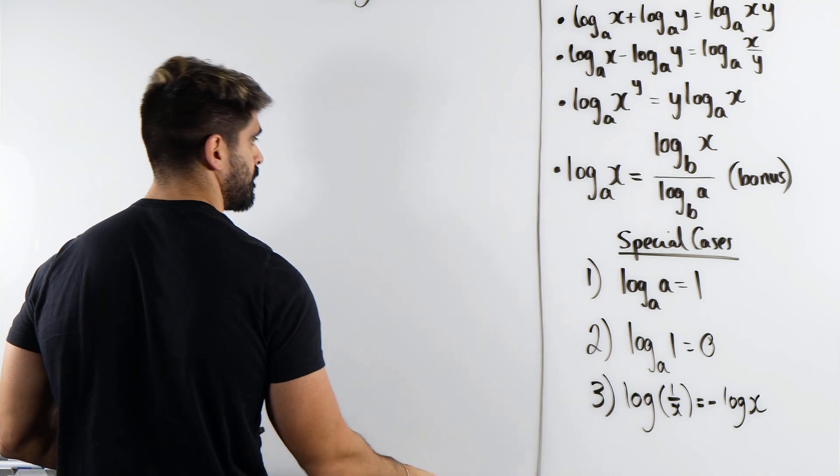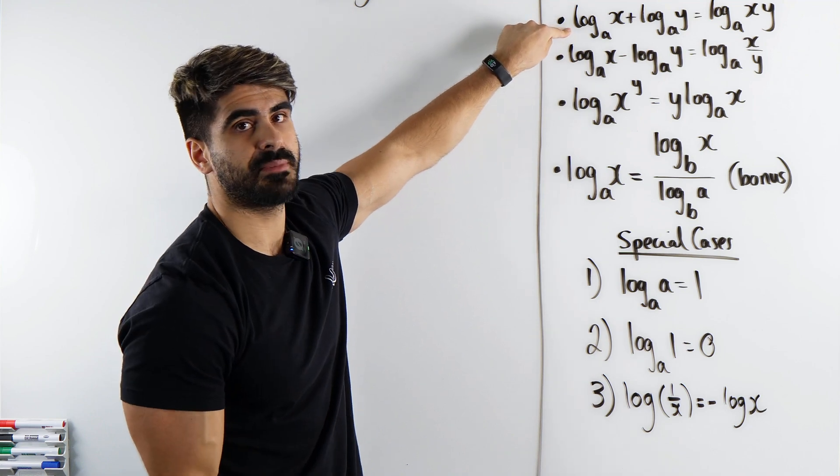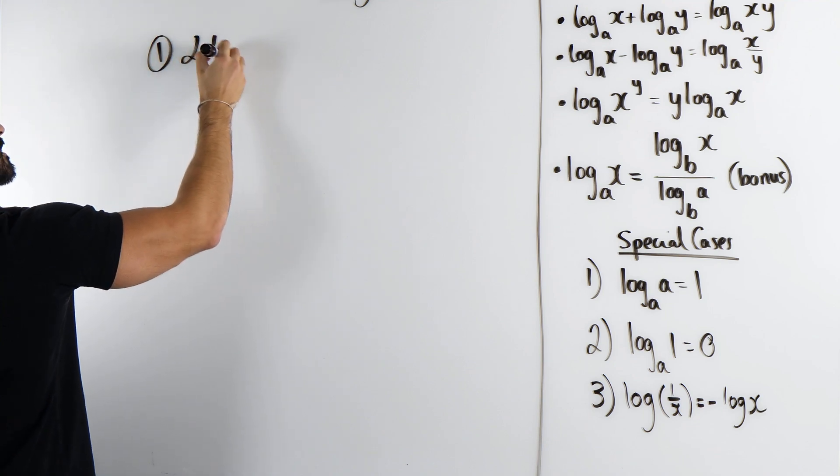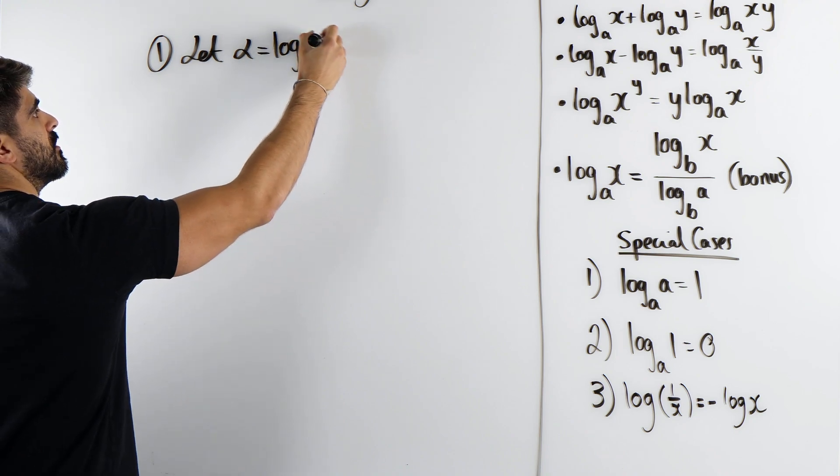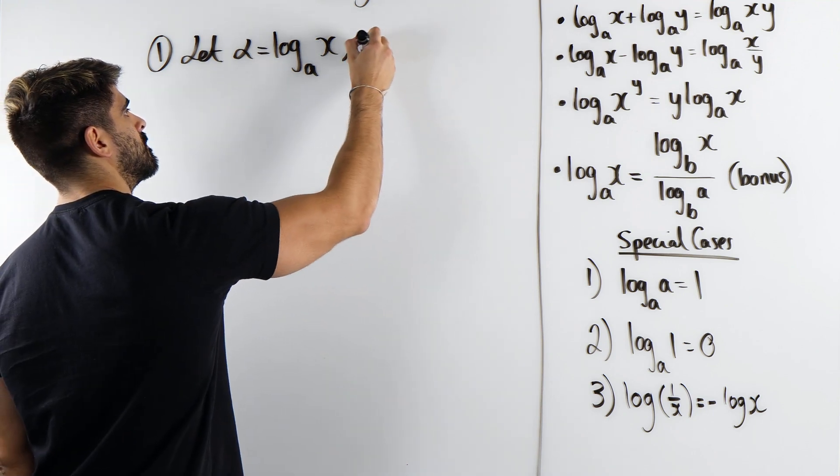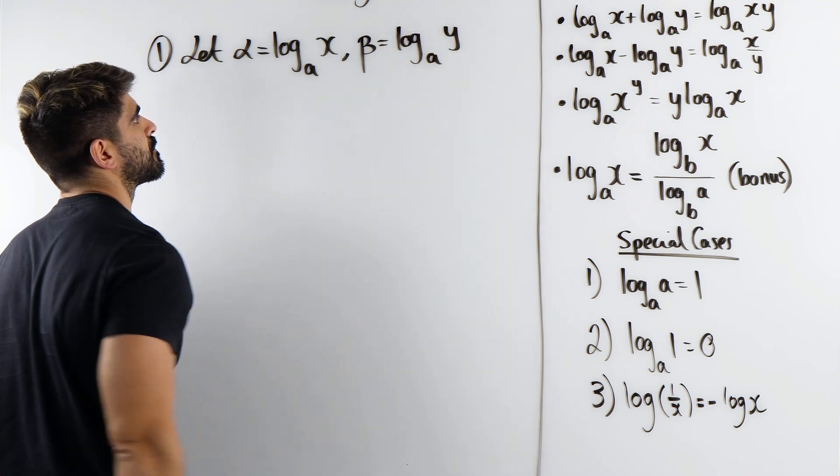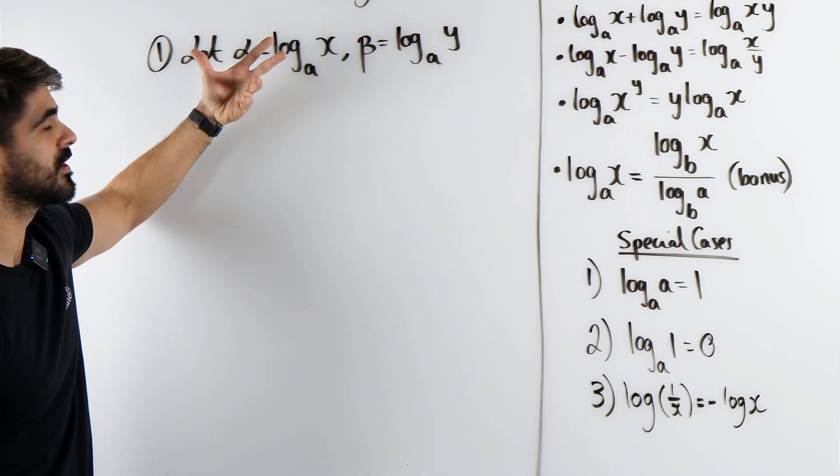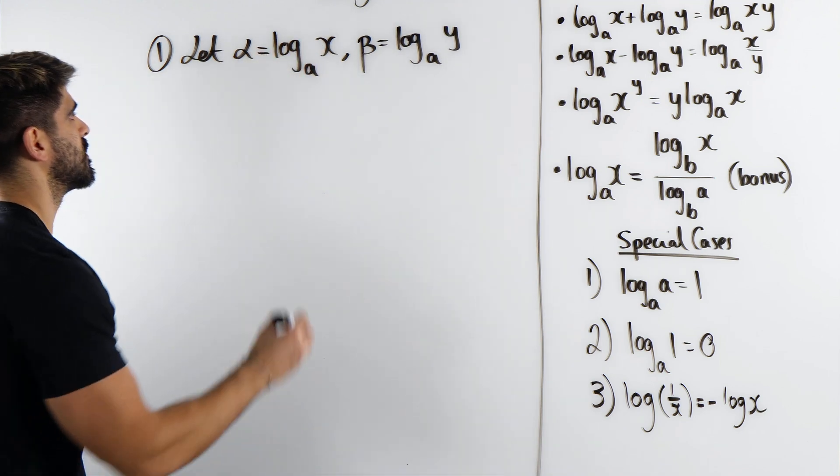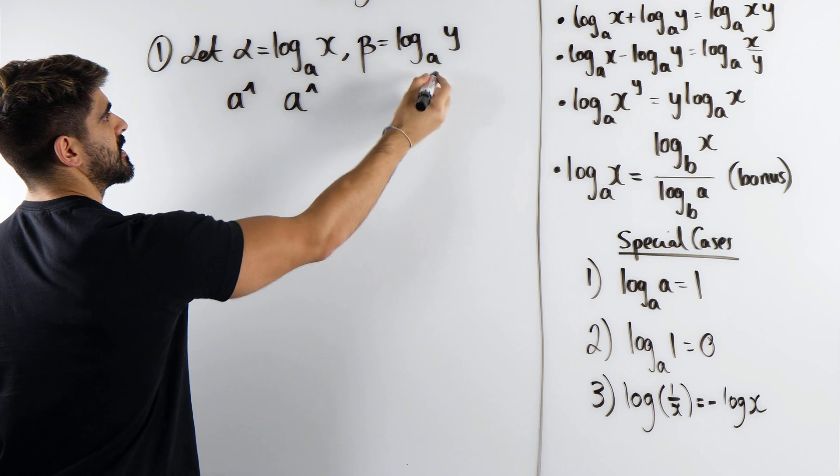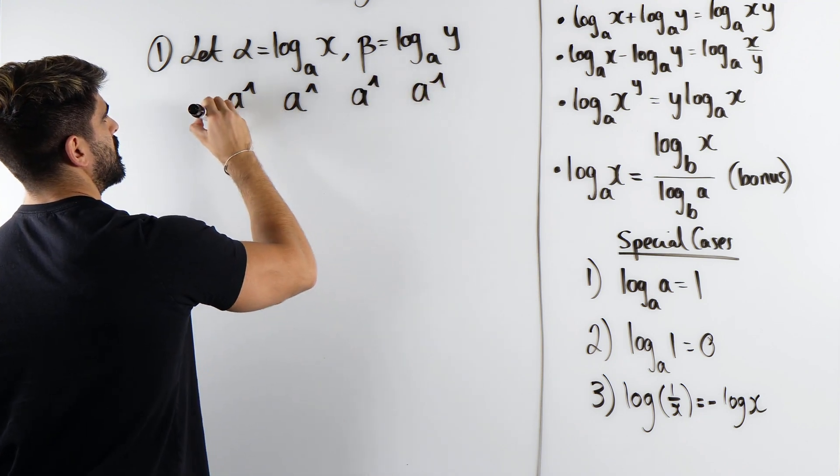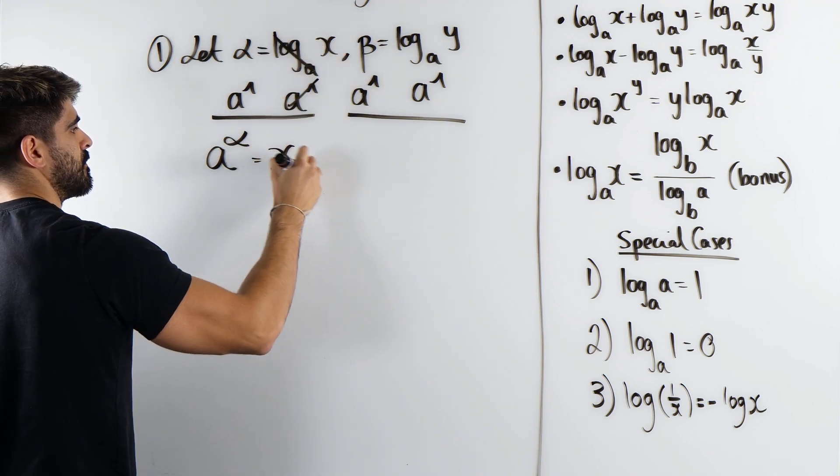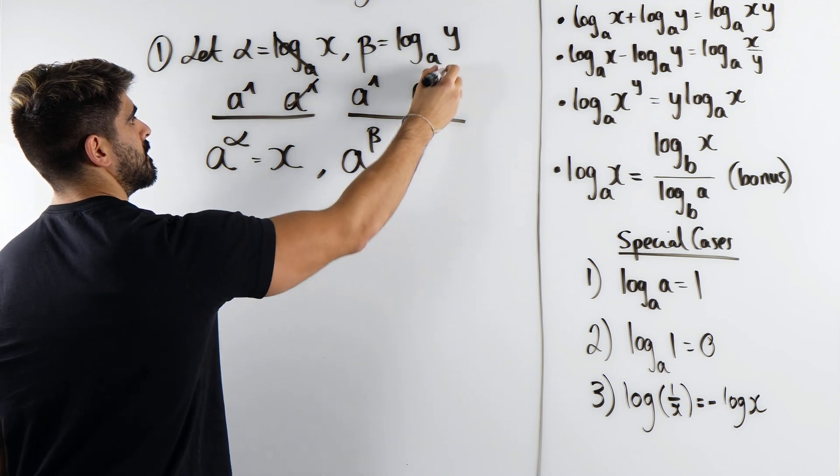So what logs do is they essentially read the powers. You add the powers when you multiply two functions together. So how do we prove this rule? It's very simple. What I'm going to do is I'm going to let this be some letter. So for rule one, I'm going to let alpha be log base A of X, and beta be log base A of Y. Now I'm going to rewrite this. I want to get rid of the log. What's the inverse of log base A? Is A to the power of. So A to the power of both sides.